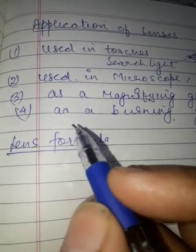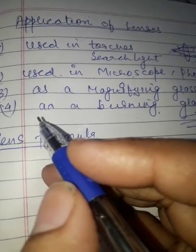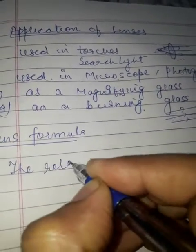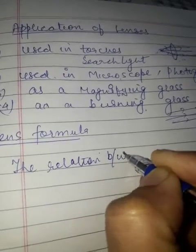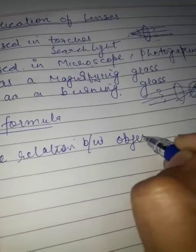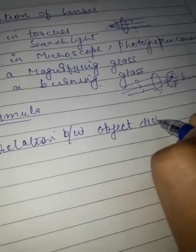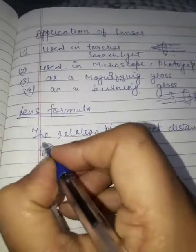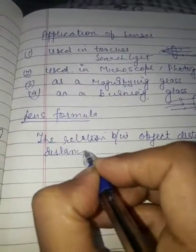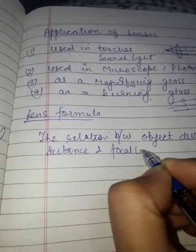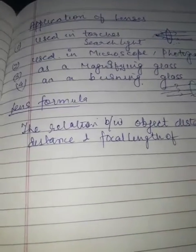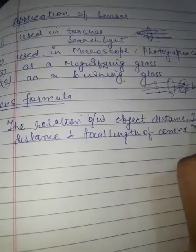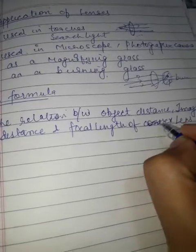The next topic is the lens formula. What is this formula? It is a relationship between object distance, image distance, and focal length of a lens — it can be a convex or concave lens.